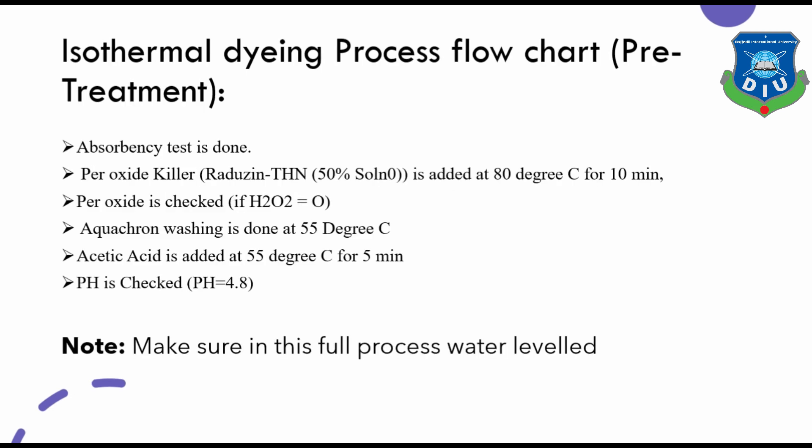Then check the absorbency test. If passed, add peroxide killer at 80 degrees centigrade for 10 minutes, then check for peroxide. Then hot washing is done at 55 degrees centigrade. Acetic acid is added at 55 degrees centigrade for 5 minutes. Then check the pH — if it is 4.8, it is good. Note: ensure the water level is maintained throughout the full process.